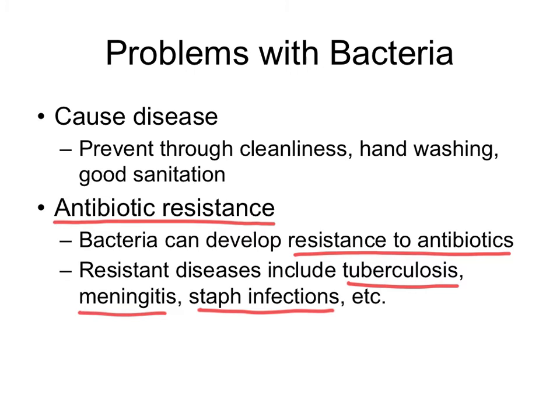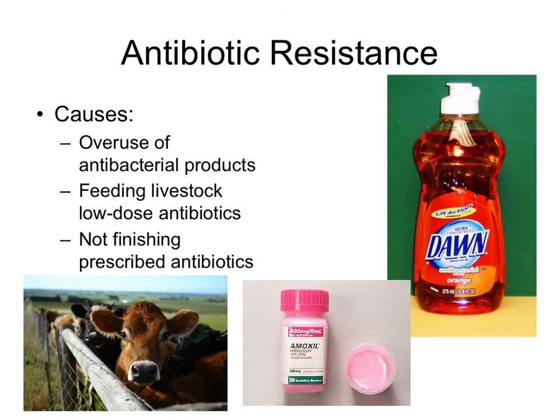It's really important that if a person takes antibiotics for an illness, they take all of their antibiotics and not just half of the medication, because stopping early can cause more resistance. Other causes of resistance include overuse of antibacterial products, feeding low-dose antibiotics to livestock, and overuse of antibacterial soaps. It's best to use regular soaps at home and encourage livestock farming without routine low-dose antibiotics.